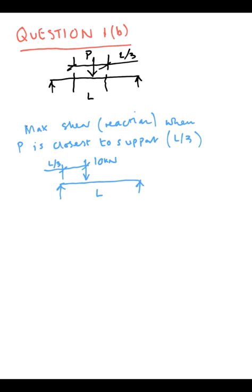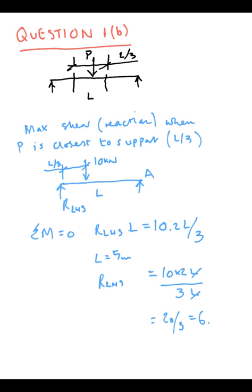We've set this up next to the left hand side. We call it RLHS and we find this by resolving moments about a point A. Summation of moments is 0, so RLHS times L is 10 times 2L over 3. We rearrange the equation, take out the L, we get 20 over 3. The maximum shear condition is 6.7 kilonewtons which is 2 thirds of 10 which occurs at the left hand side.